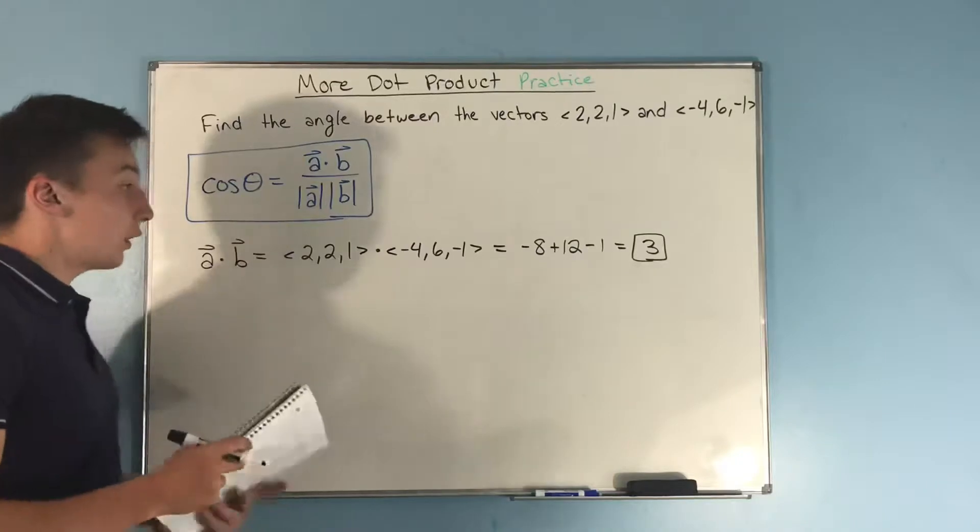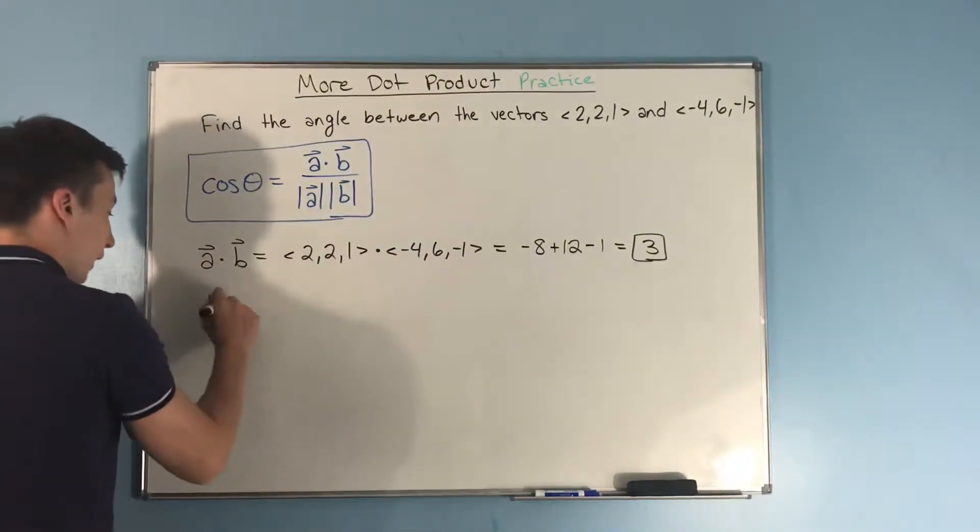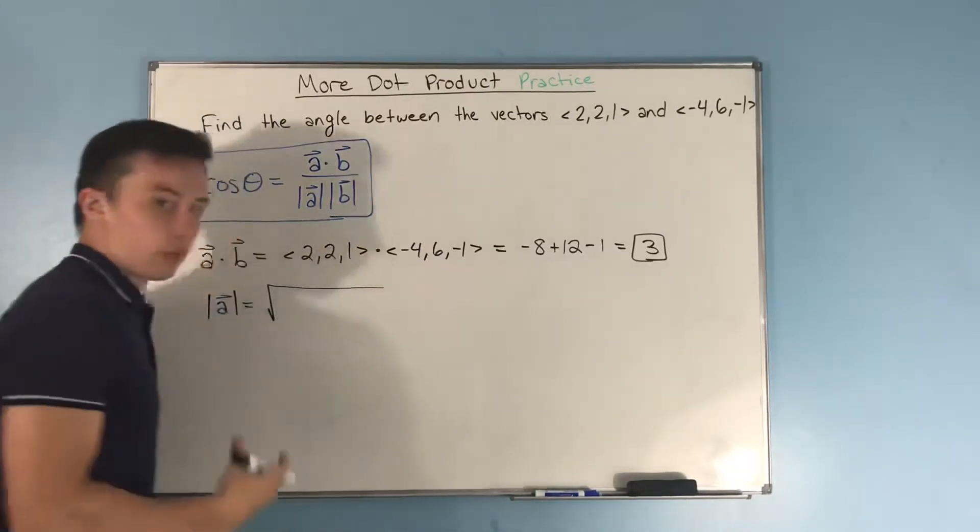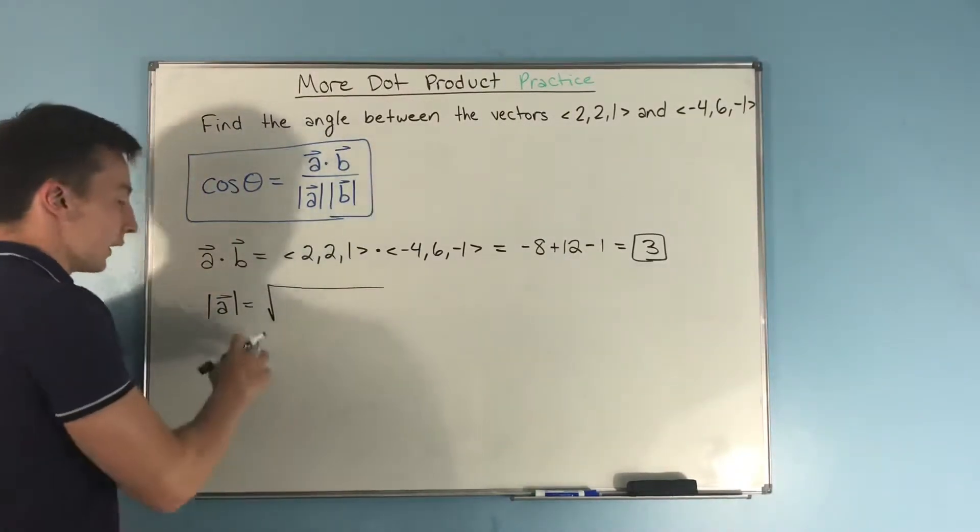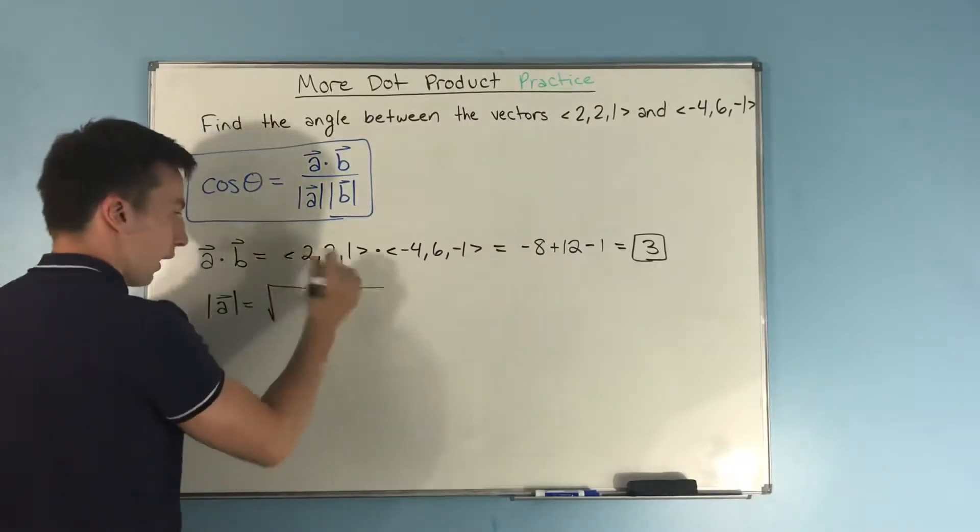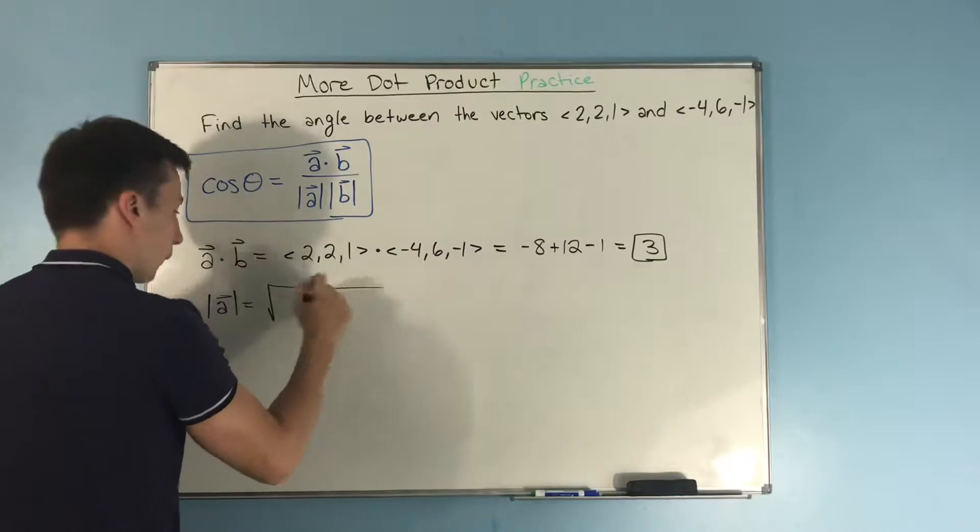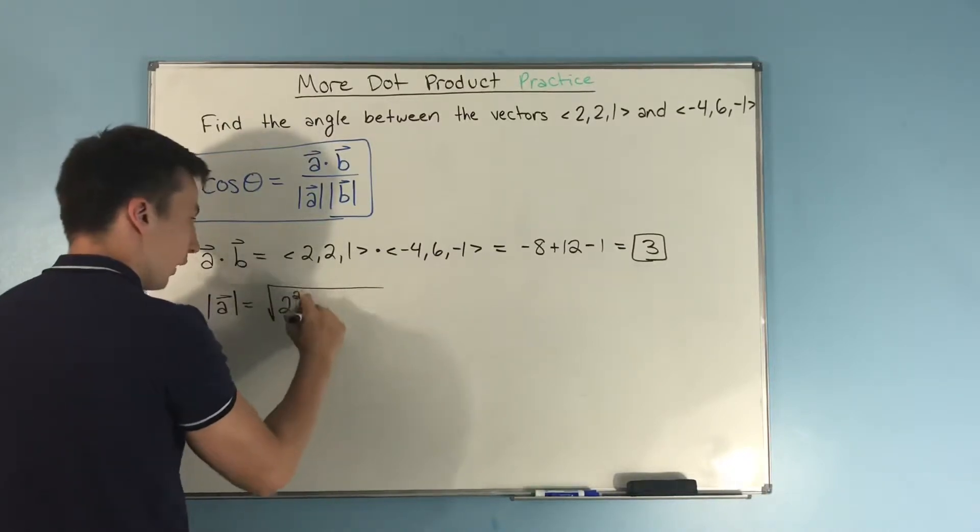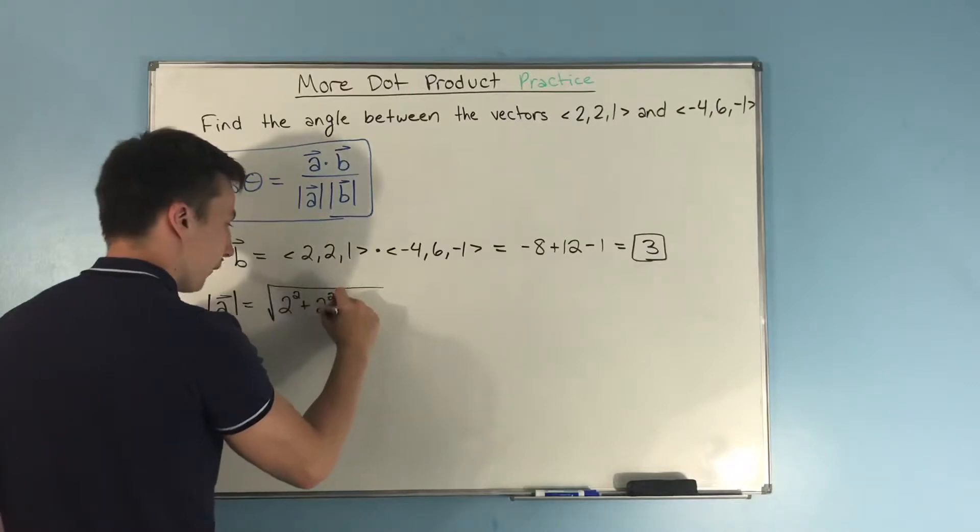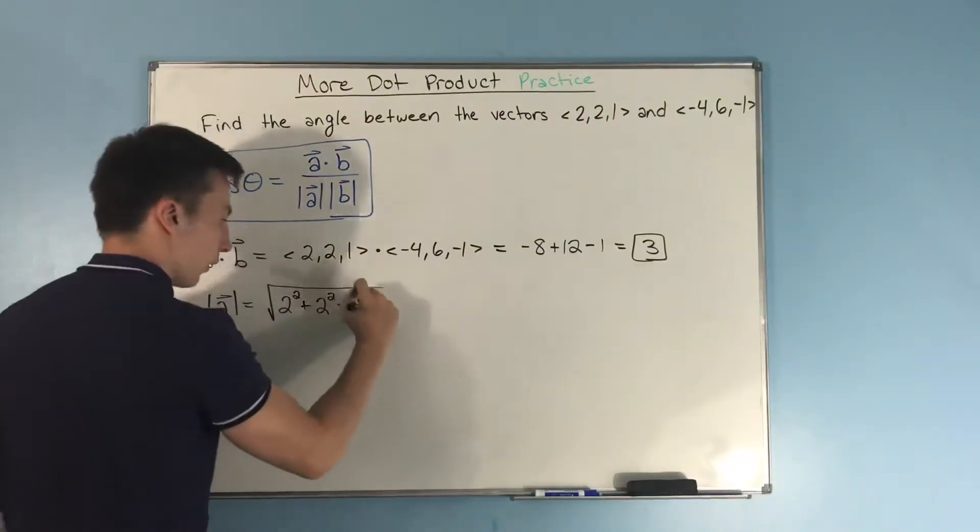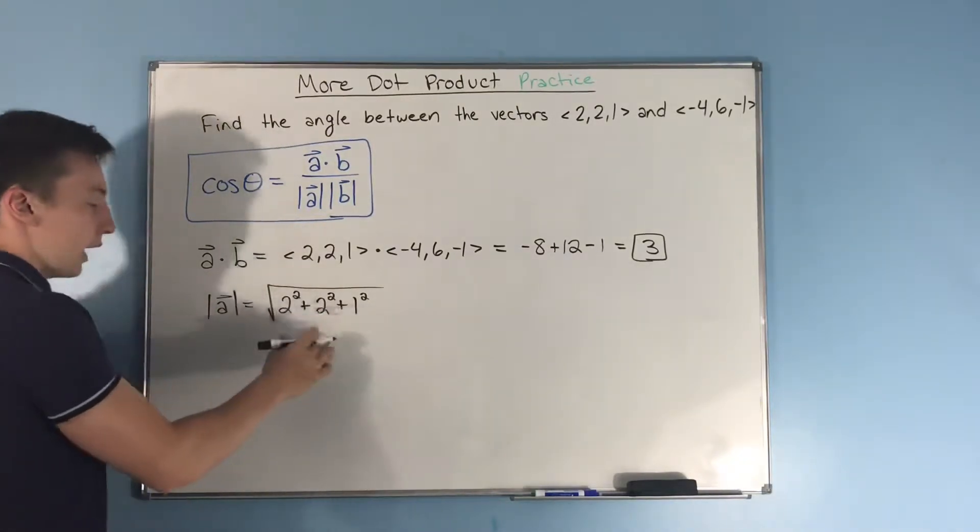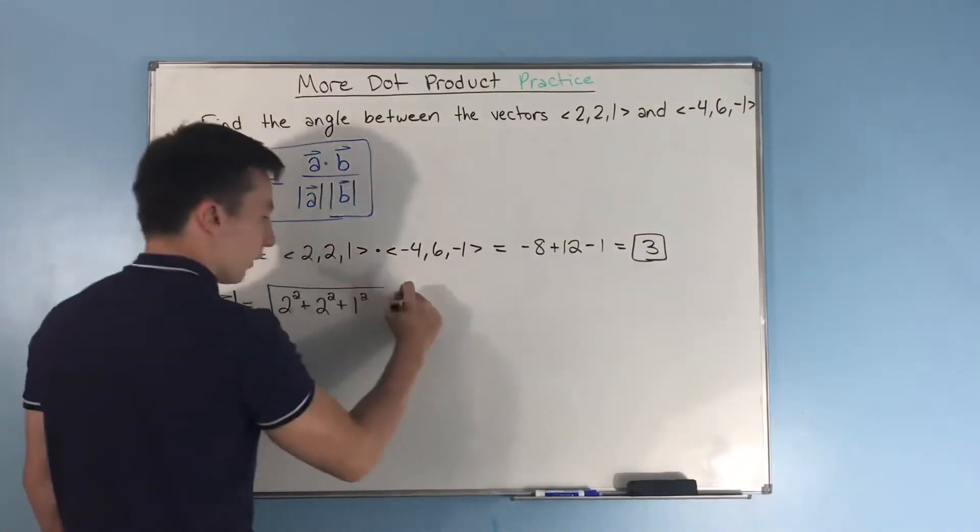So now we found the top. We need to also find the magnitude of a, and we do that by basically our distance formula. We need to put the x component of a, which this is vector a. We're going to put 2 squared plus our y component squared, so 2 squared, plus our z component squared, 1 squared. That's equal to 4 plus 4 plus 1, that's 9, and we square root that to get 3.